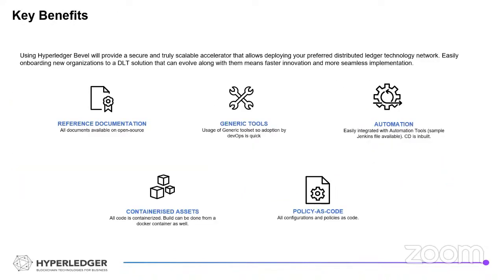The key benefits of using Bevel are three aspects. First, it provides a secure environment for deployments by utilizing best key management practices available by default. Second, it is a truly scalable solution, allowing platforms to be used for early POCs and pilots and then scaled up to run in a true production environment. Third, it is an accelerator that provides a proven architectural pattern for DLT deployment. With Bevel, you can create a dev or test environment in under an hour and cut development time from weeks to hours.